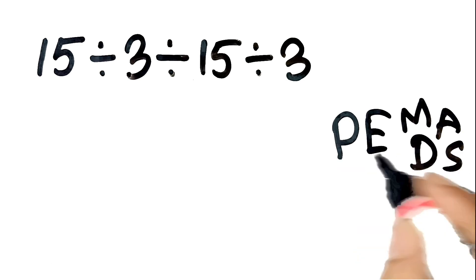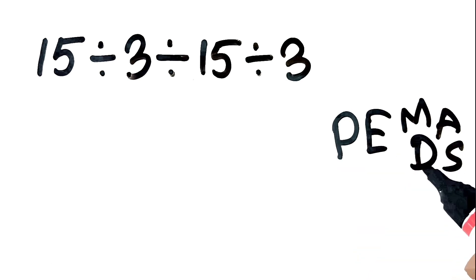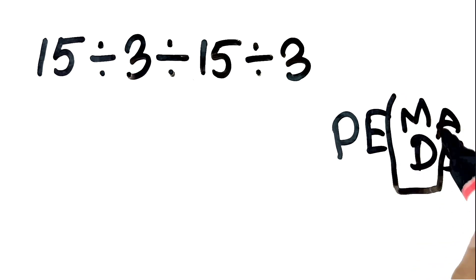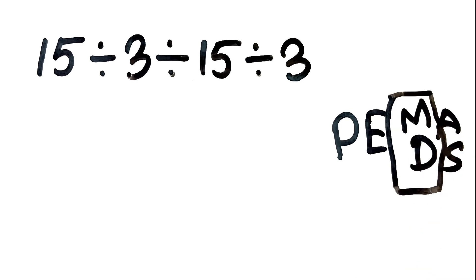That's parentheses, exponents, multiplication, division, addition, subtraction. Quick note, multiplication and division have the same priority. So, when you have multiple divisions or multiplications in a row, you go left to right. That's key.